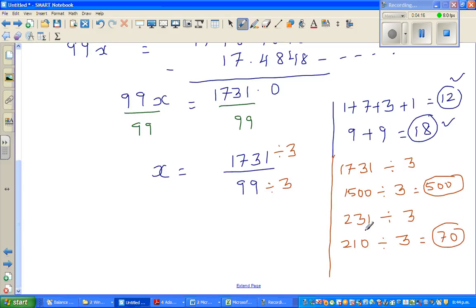Now from 231, you have taken 210. So what is left? Left is 21 divided by 3 is 7. So in other words, this becomes 577.